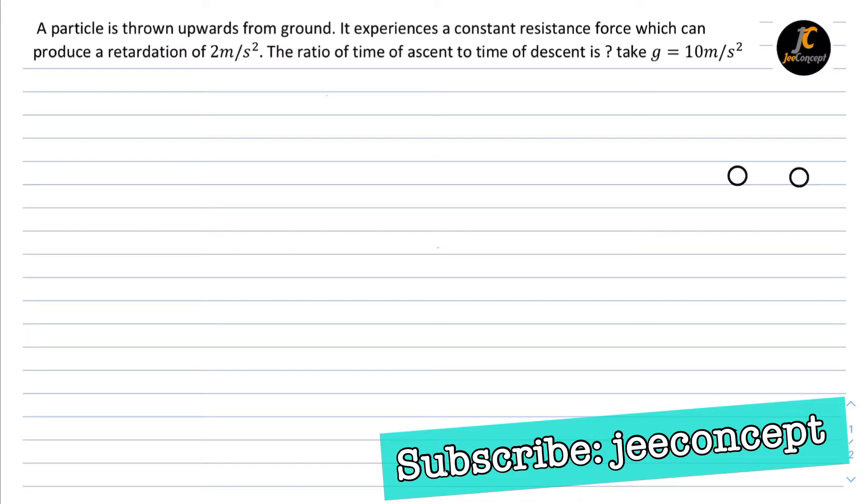Hello friends, in this video we will find the solution to this question which says a particle is thrown upward from ground. It experiences a constant resistance force which can produce a retardation of 2 m/s². We have to find the ratio of time of ascent to time of descent in this case where g = 10 m/s².